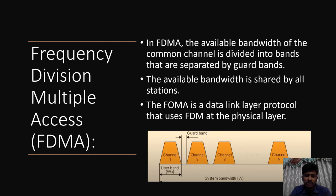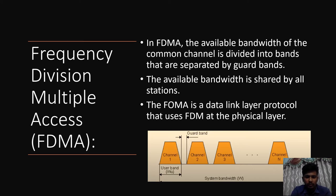Looking at the diagram, the entire bandwidth is shared among n stations. We create n internal channels — channel 1, channel 2, channel 3, up to channel n. This common channel is divided into user bands, and each band is assigned to each station so that each station can transmit data at the same time. To avoid overlapping of channels, we use a guard band — that frequency space is not used and is wasted to prevent channel overlap. FDMA is a data link layer protocol that uses FDM at the physical layer.